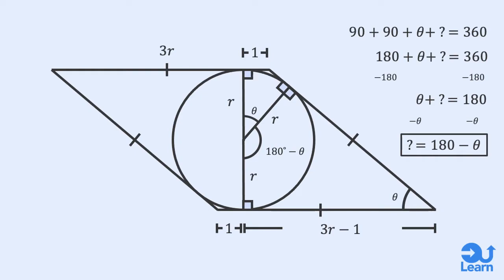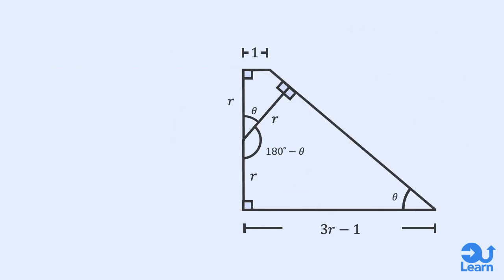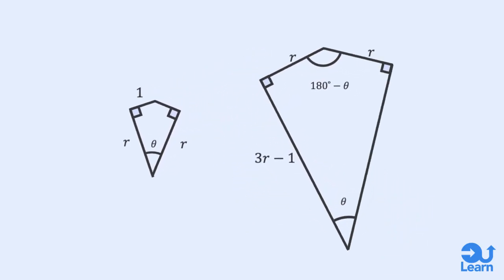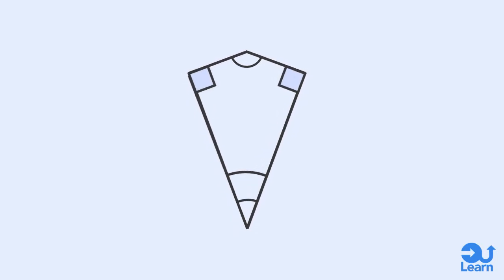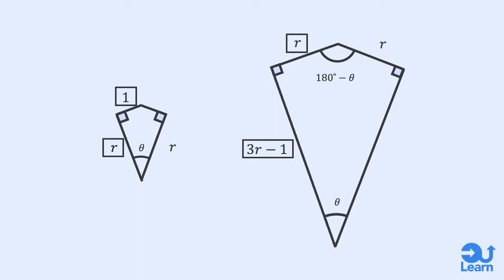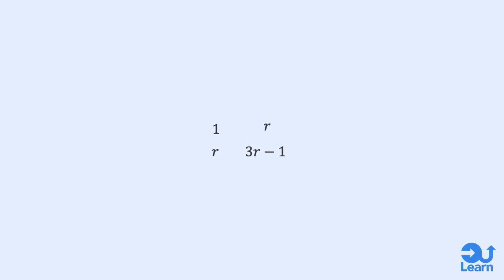Okay, everything's been labelled. We will now only focus on these two quadrilaterals. They are both right kites with the same angles. Therefore, they are both mathematically similar. They are the same shape but different sizes, which means the relationship between the corresponding lengths would also be the same. This means that 1 over r is equal to r over 3r minus 1.